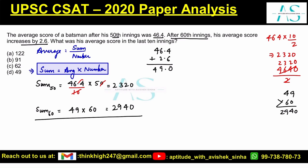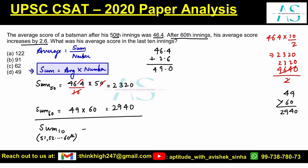The total runs for 60 innings includes the 51st, 52nd, going up to the 60th innings. To find the runs in the last 10 innings, take the difference: 2940 minus 2320, which equals 620 runs.